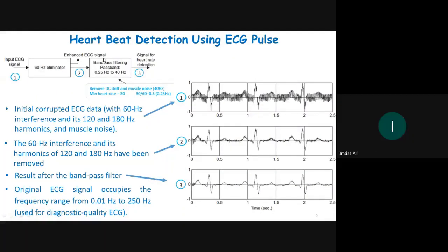If you download ECG data from the internet and it doesn't have any humming sound, you initially corrupt it by incorporating 60 Hz, 120 Hz, and 180 Hz signals into it, producing a corrupted waveform. After that, you remove those by passing the signal through a filter — first a 60 Hz eliminator, then 120 Hz and 180 Hz notch filters.